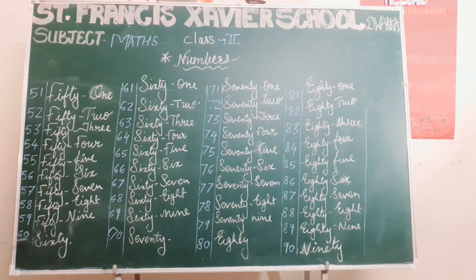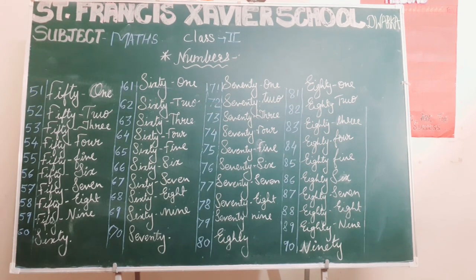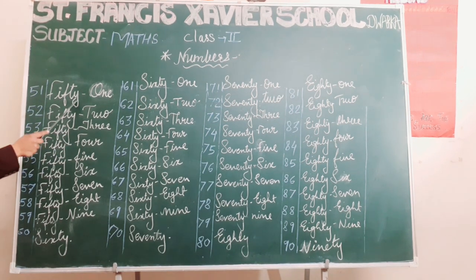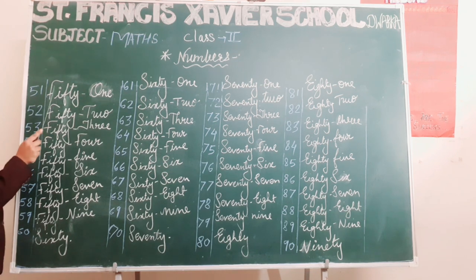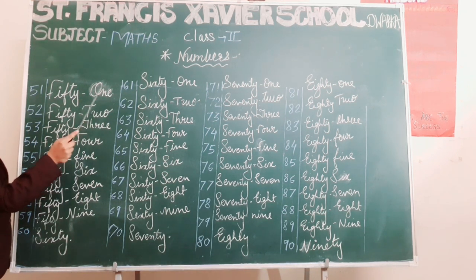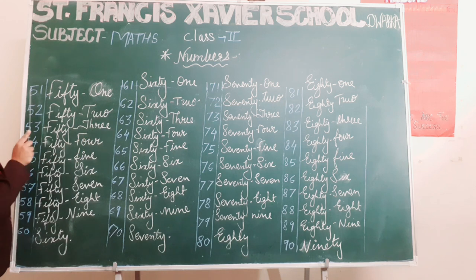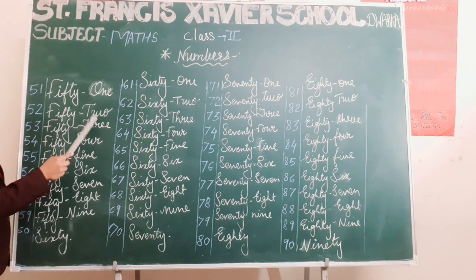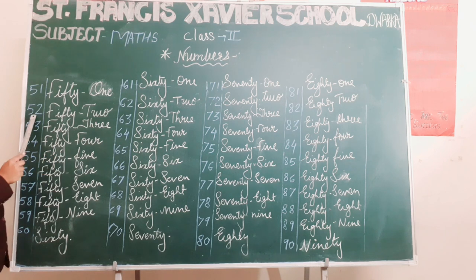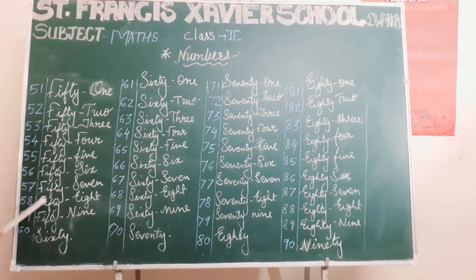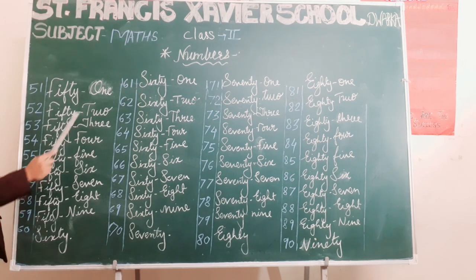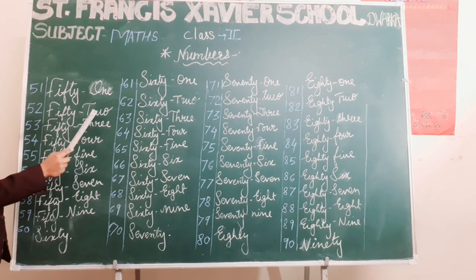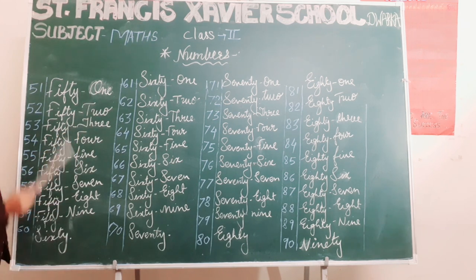60. Here are the notations: F-I-F-T-Y, 50, O-N-E, 1 — that makes 51. Like that, F-I-F-T-Y T-W-O, 52. So on — the spelling of 50 and the spelling from 1 to 9.